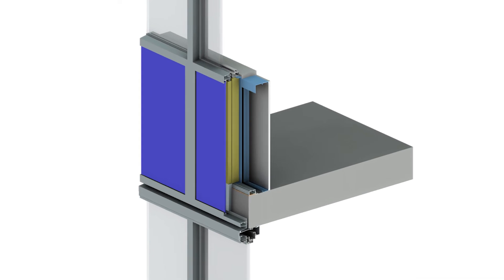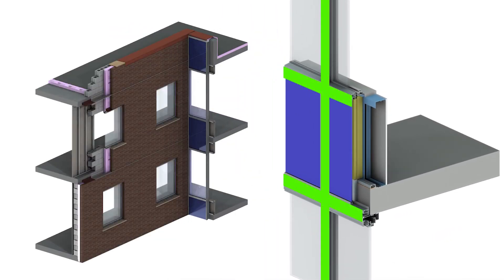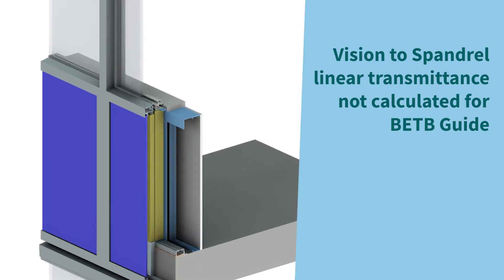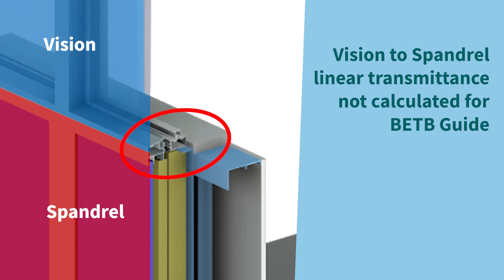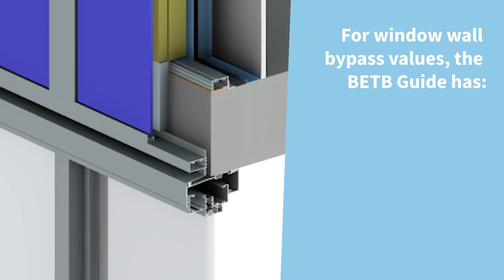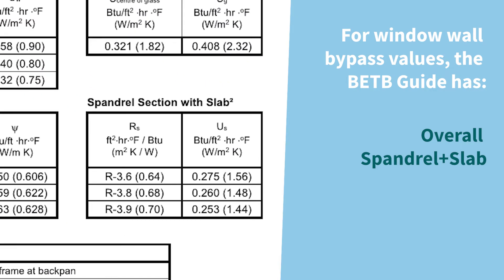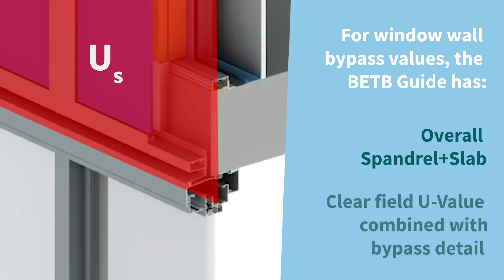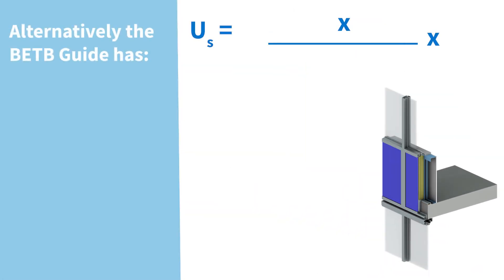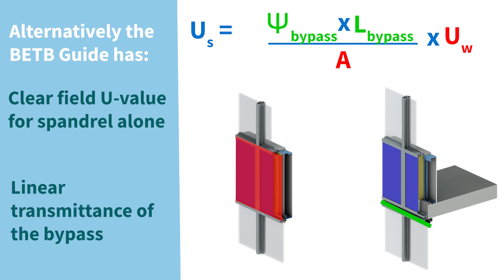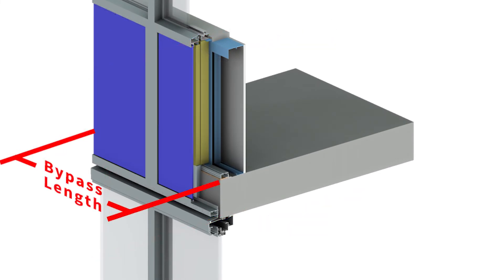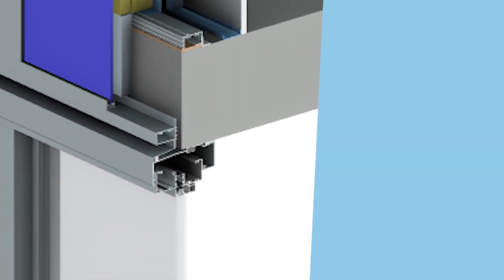Spandrels. Spandrels within glazing systems, such as curtain wall and window wall, are part of the opaque building envelope, but the vision and spandrel systems share the same framing. In the BETB guide, a separate linear transmittance for the glazing transition has not been calculated. Instead, any thermal bridging impacts related to the interface, beyond what is considered in an NFRC analysis of the vision section, is included within the spandrel thermal transmittance. For a window wall bypass where the backpan and insulation are interrupted by the concrete floor slab, the BETB guide includes an overall spandrel plus slab U-value and R-value for the specific size of spandrel modeled. This is a clear field value that includes the impacts of the bypass and deflection header, so no additional linear transmittances are needed. Alternatively, you can calculate the opaque spandrel U-value using a combination of clear field and linear transmittances. The spandrel area is from the horizontal mullion between the vision and spandrel sections to the slab, using the slab length for the bypass linear transmittance. Note: the linear transmittance includes the impact of the deflection header.